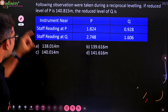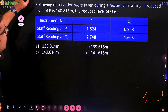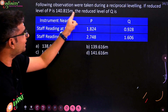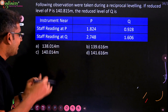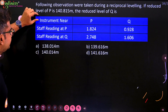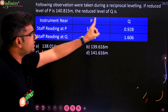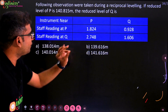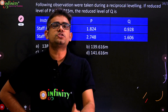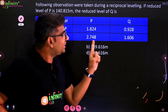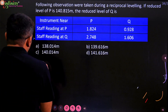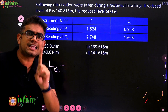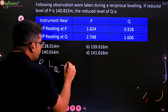Let us see them one by one. So first, if you take this problem — the given is: following observations were taken during a reciprocal leveling. If the reduced level of P is 140.815 meters, the reduced level of Q is to be found. They have given data like instrument near station P and instrument near station Q with some readings. They are asking to determine the RL of Q. So first, you must write the formula to determine the difference between elevations in reciprocal leveling. So RL of Q minus RL of P equal to...